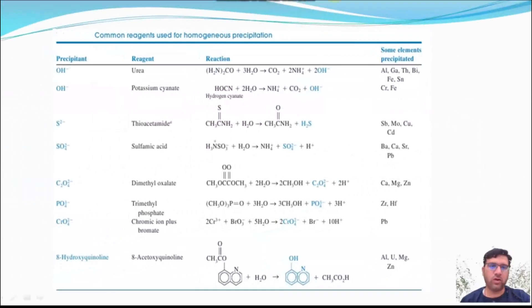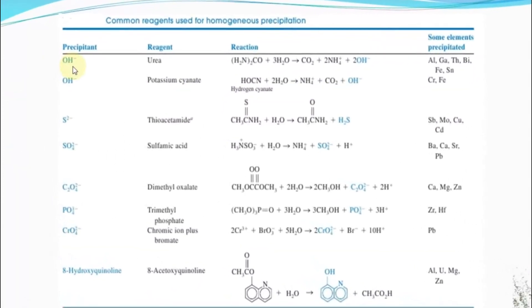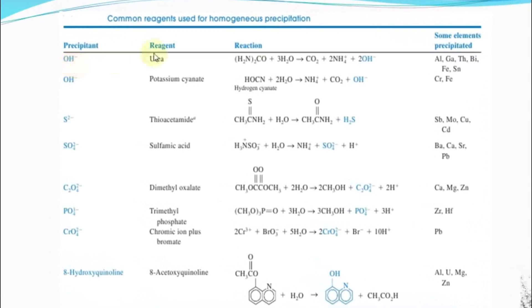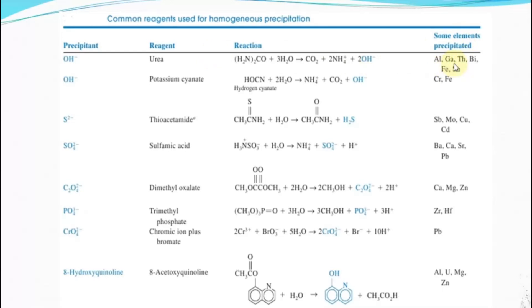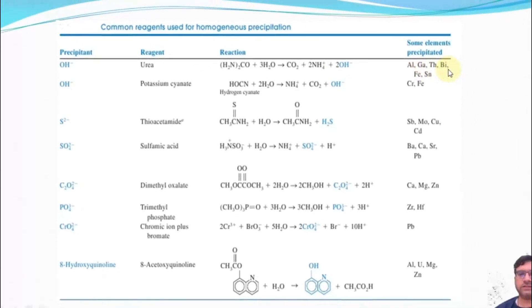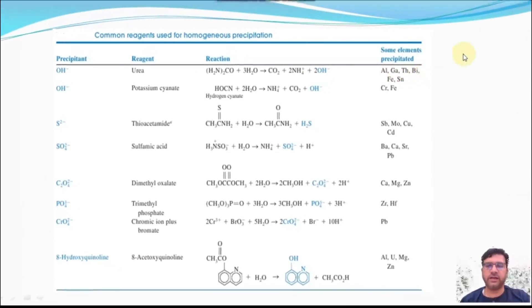Common reagents used for homogeneous precipitation: the precipitant is hydroxide, the reagent is urea, and some elements precipitated include aluminum, gallium, bismuth, iron, tin, etc.